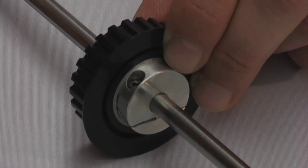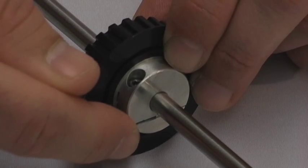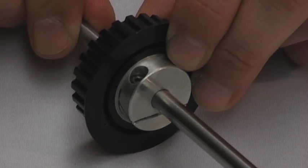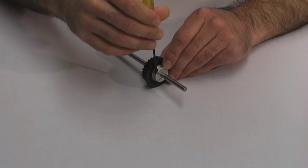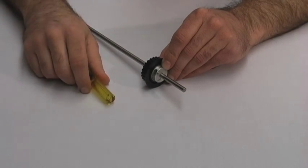Tightening the cap screw pulls the bottom slot towards the shaft and locks the component in place. Fairlock is easy to adjust and components can be positioned and repositioned with a single hex key adjustment.